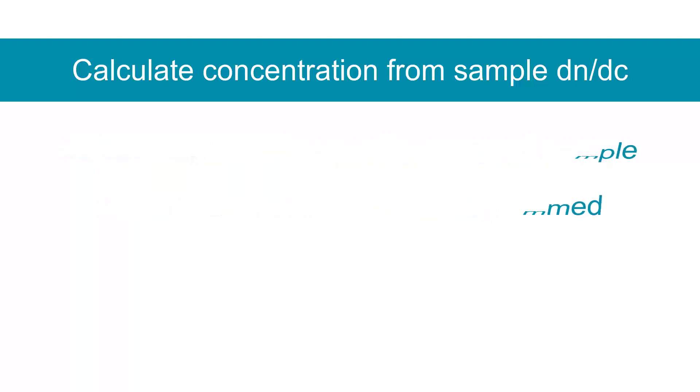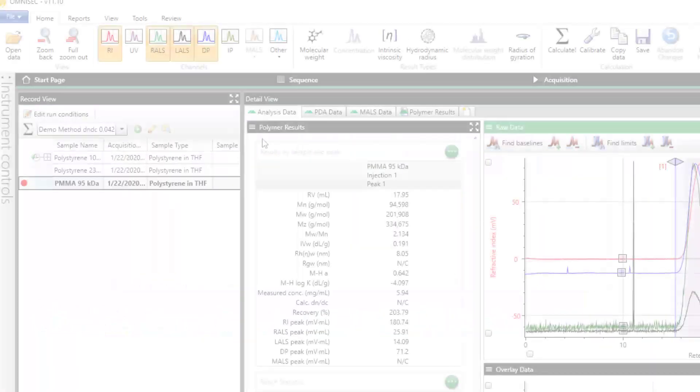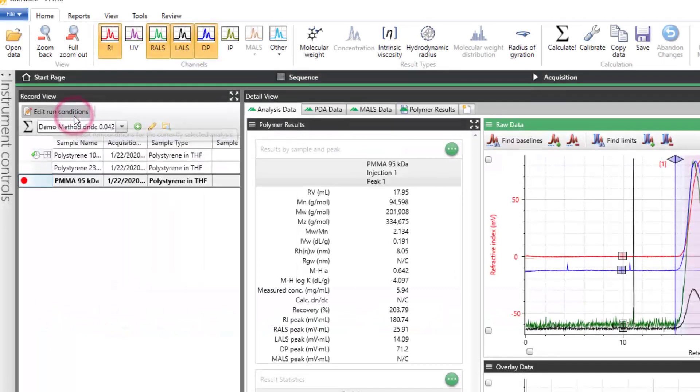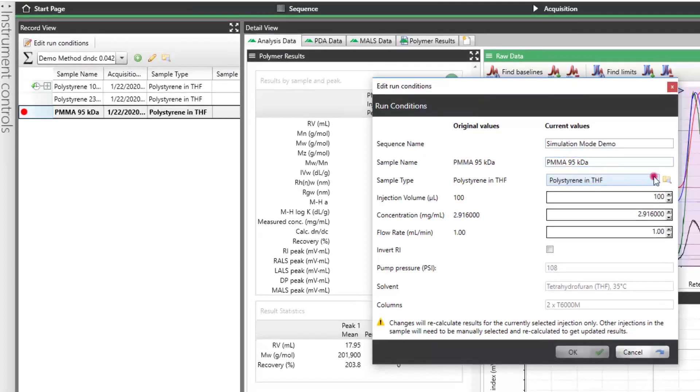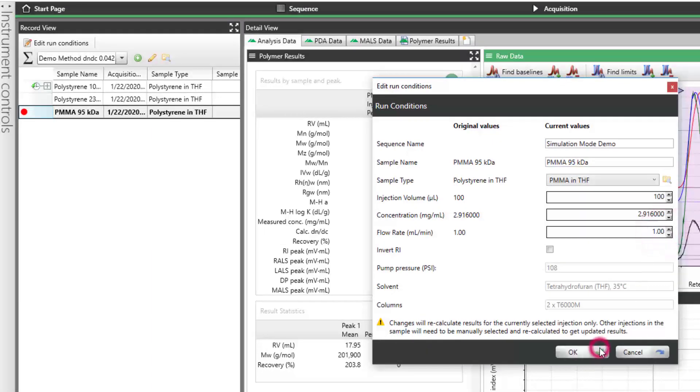What differentiates this method type from the next one is that multiple sample types, each with different DNDC values, can be analyzed using the same method. If the sample type DNDC needs to be changed after the data has been acquired, that can be done by clicking Edit Run Conditions and selecting the correct sample type.